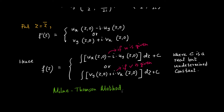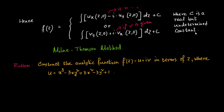Now let us see how we can solve problems using this method. The problem is: construct the analytic function f(z) = u + iv in terms of z, where u is given as x³ - 3xy² + 3x² - 3y² + 1. To construct the analytic function, we first need to confirm that the harmonic conjugate of u actually exists, which requires u to be a harmonic function. So first we check whether u satisfies the Laplace equation: u_xx + u_yy = 0.